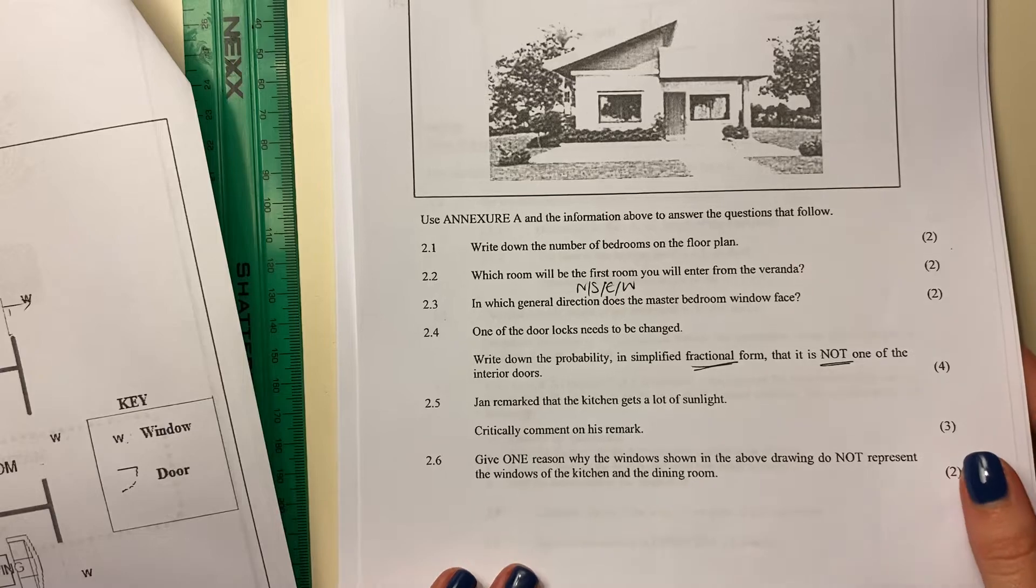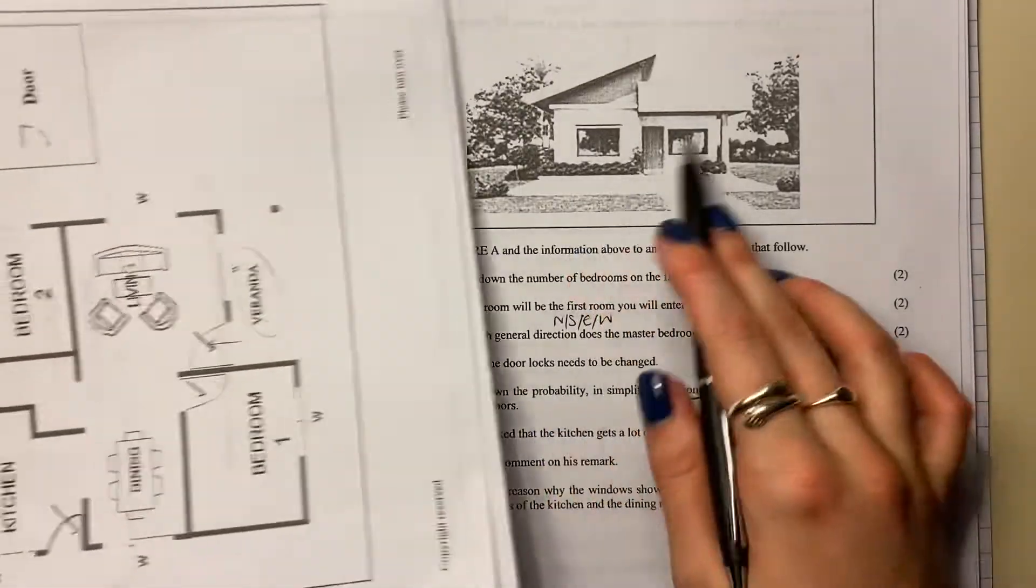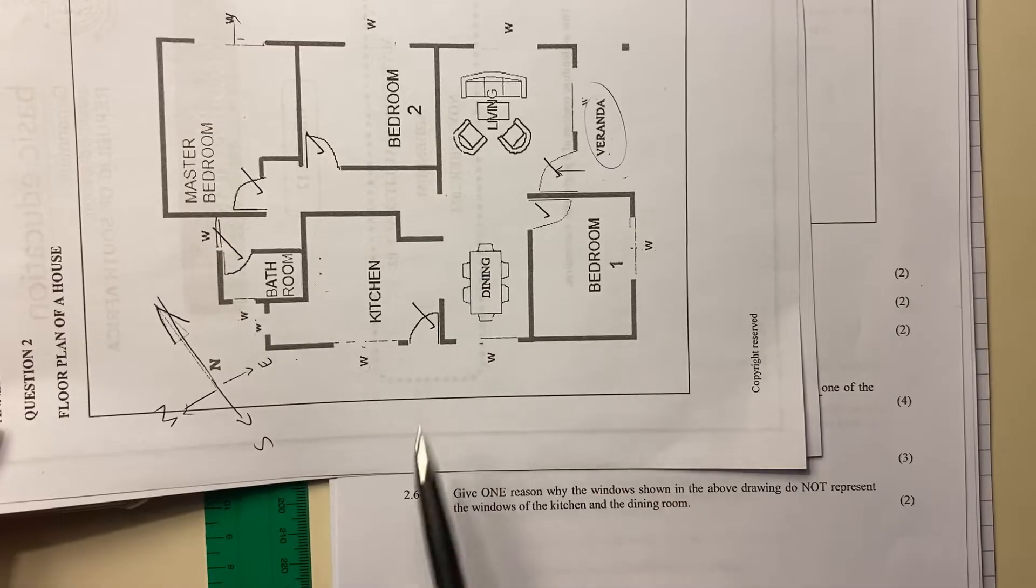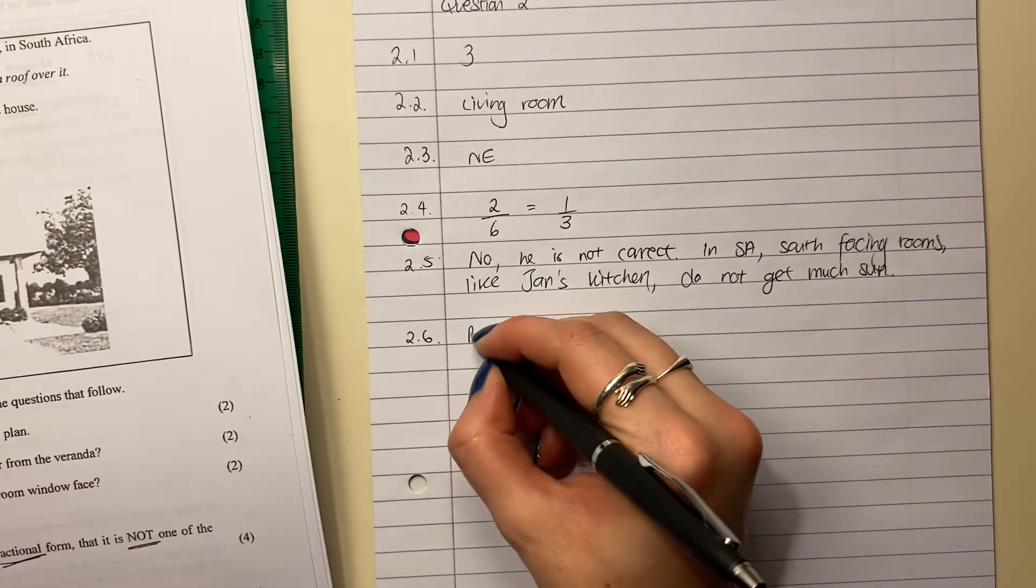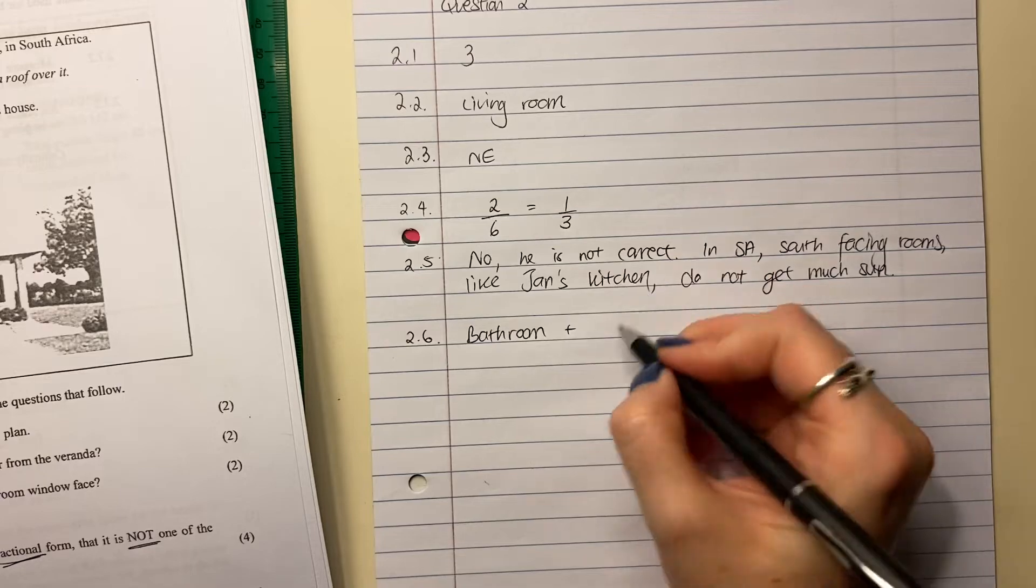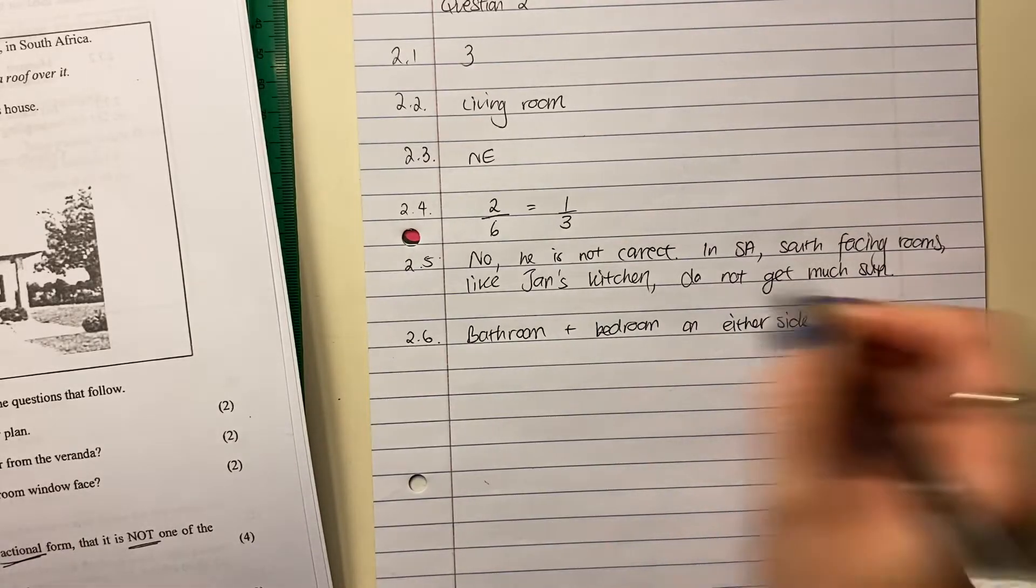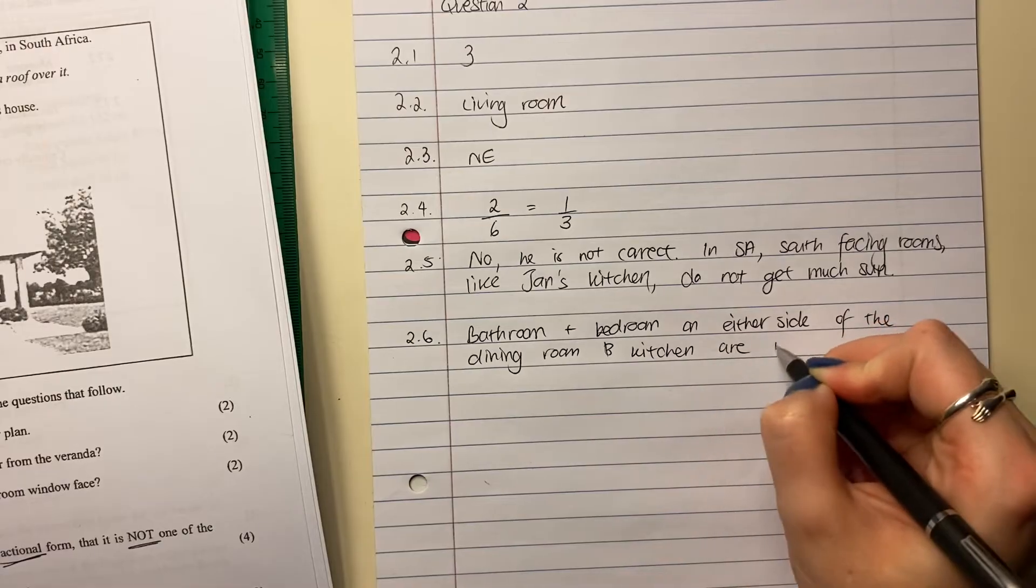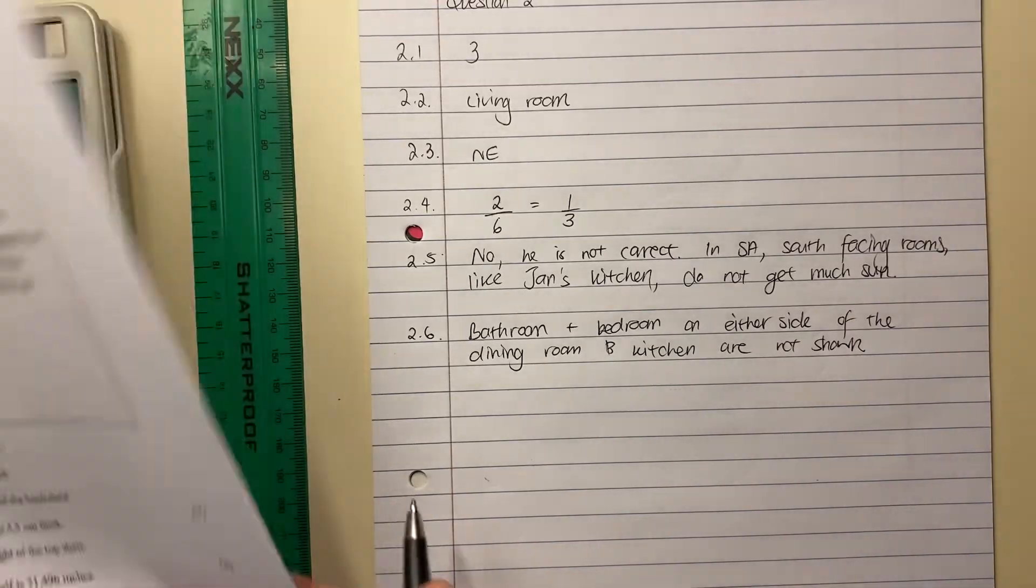Let's continue. Give one reason why the windows shown in the above drawing do not represent the windows of the kitchen and the dining room. So if it was the kitchen and the dining room - so basically I'm changing the view and there would be the kitchen and the dining room - well, it doesn't make sense because it doesn't show the bedroom or the bathroom. And if we were looking at it from this direction and those windows were the kitchen and the dining room, then we would expect to see these other rooms. So we say, I would just say the bathroom and bedroom on either side of the dining room and kitchen are not shown. So basically saying it can't be that because they're not shown.